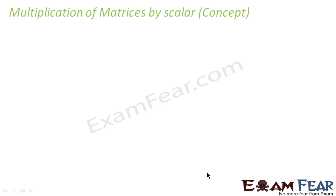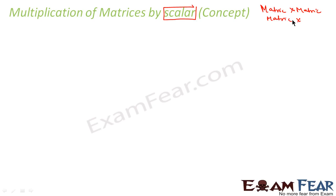Now let's understand a new topic: multiplication of matrices by a scalar number. Please note 'scalar' is a keyword here because there are two kinds of multiplication we will study. One is multiplication of a matrix by a matrix, and the second is multiplication of a matrix by some number. Scalar is just a fancy term — it actually means number.